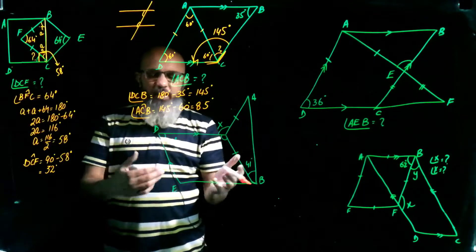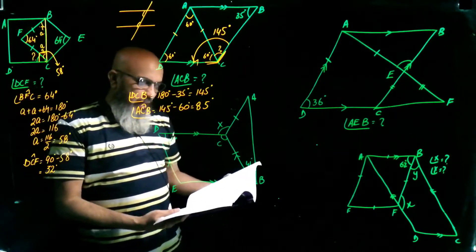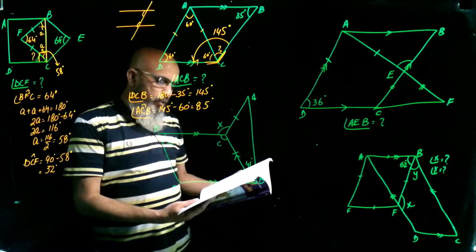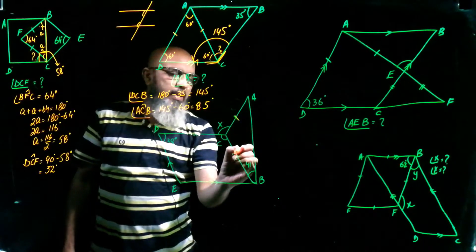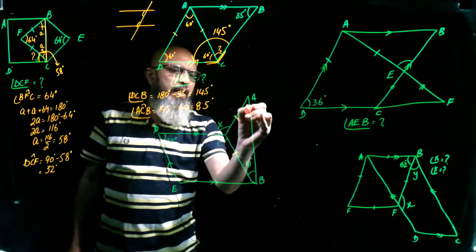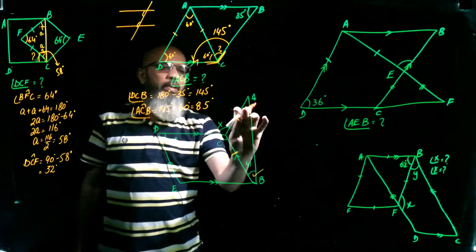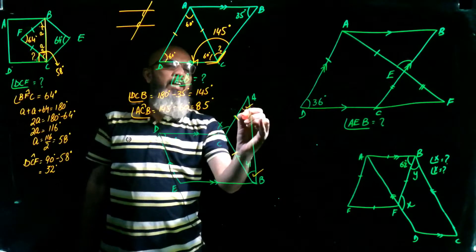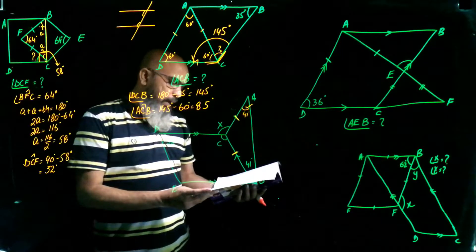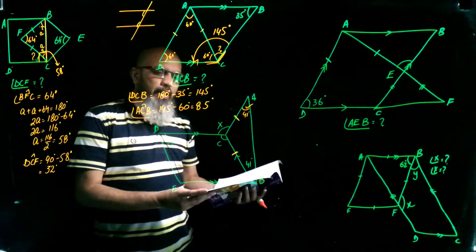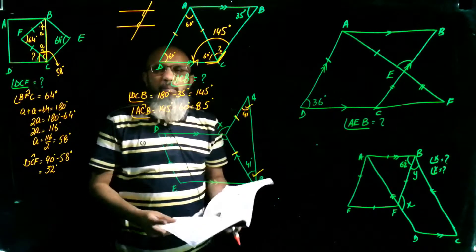The third question involves an isosceles triangle ABC. Since two sides are equal, the two base angles are equal. Given one angle is 41 degrees, the other base angle is also 41 degrees.